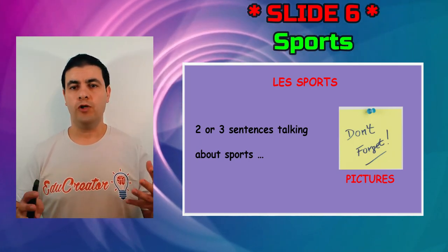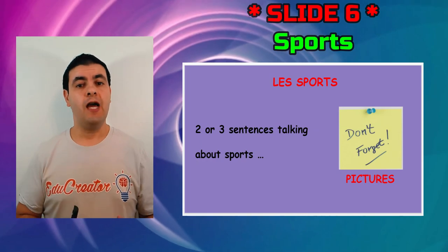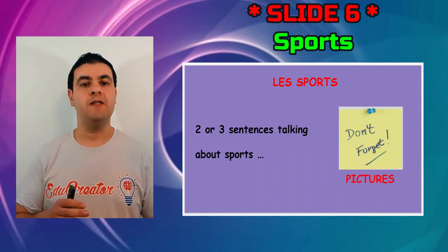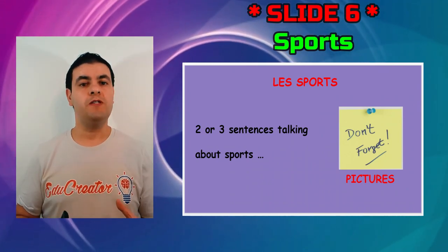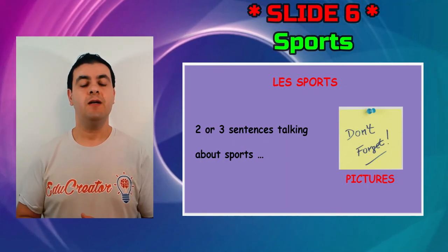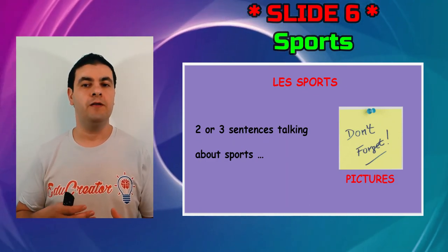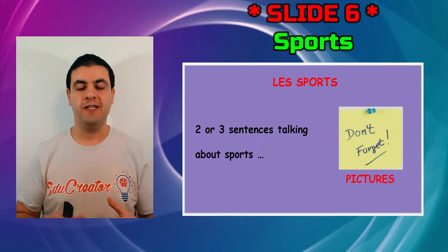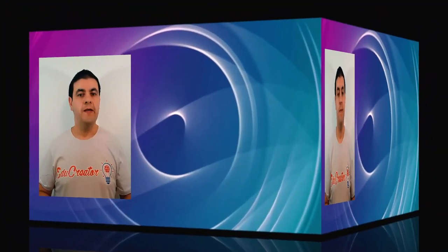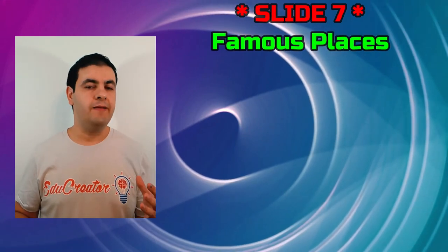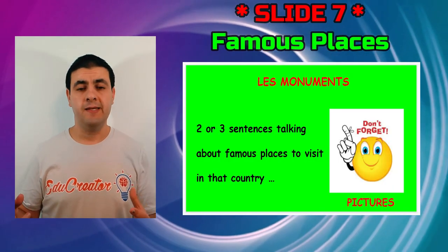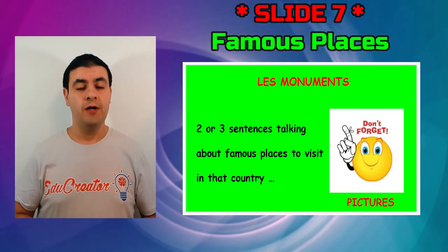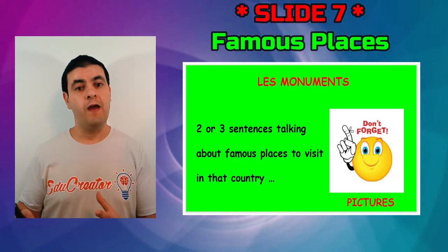Slide six is about sports in that country. Talk about sports in general and then the most played sport. For example: 'France is famous for cycling, but the most famous sport is football' — you can even mention they won the World Cup twice, and include pictures of national team players or famous athletes. Slide seven covers famous places to visit: write a couple of sentences, for example mentioning the Eiffel Tower for France, and include pictures of those famous places.